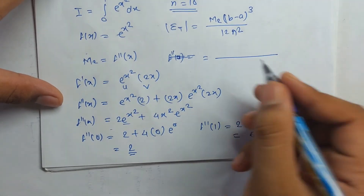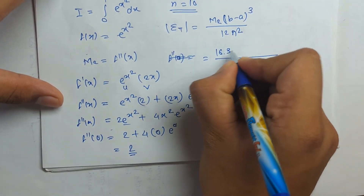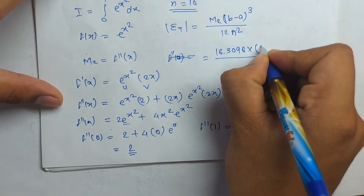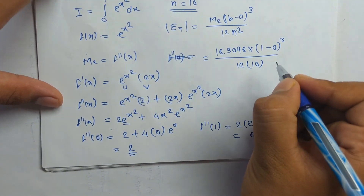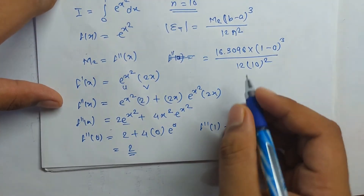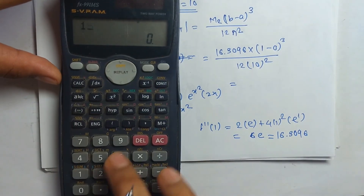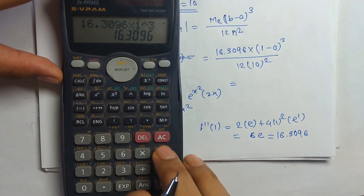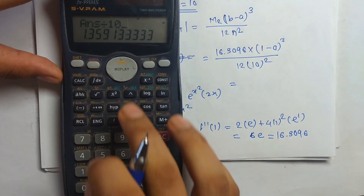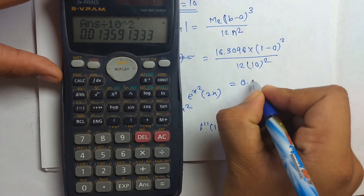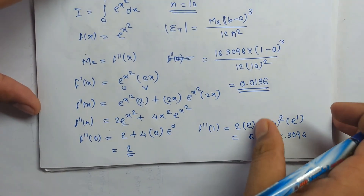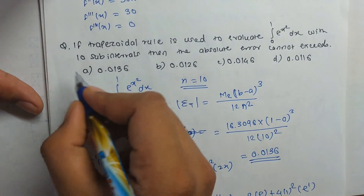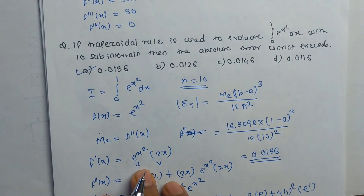Substituting into the error formula: Error = 16.3096 × (1 − 0)³ / (12 × 10²) = 16.3096 / 1200 ≈ 0.0136. Rounded to 4 decimal places, the answer is 0.0136, which is option A. This is how you solve error bound problems for numerical integration.